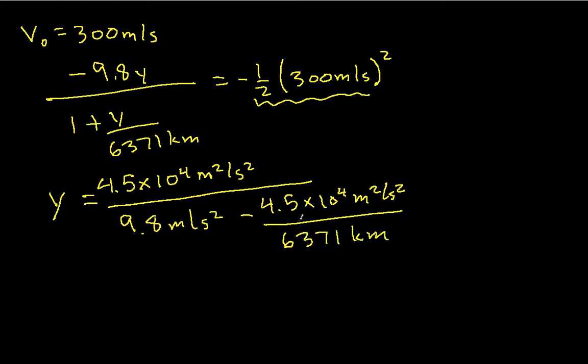Okay, so you can see that the way V0 shows up is it shows up here in the numerator and here in the denominator. And when I solve this, I end up with 4.595 kilometers.